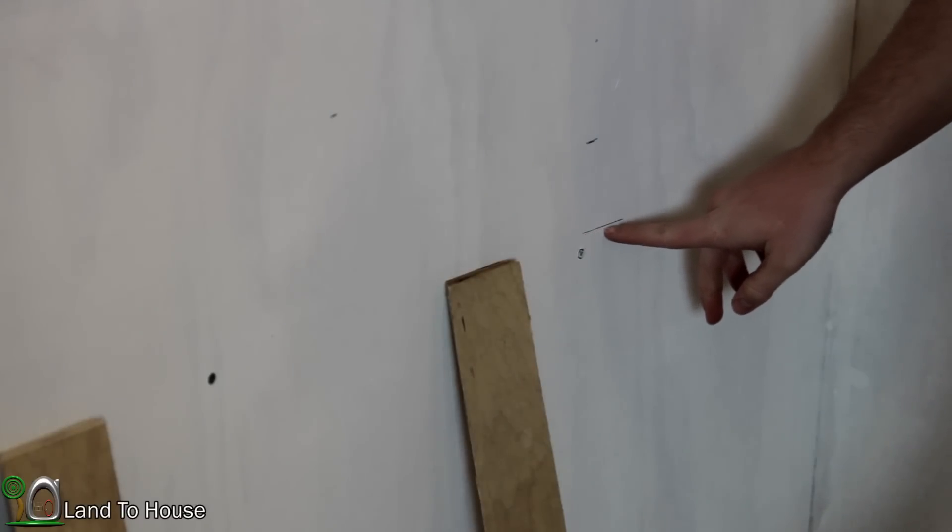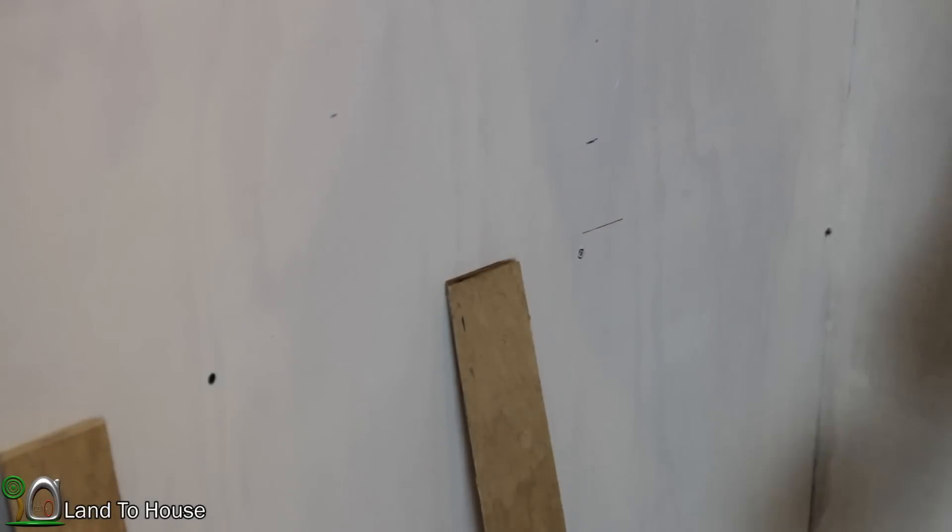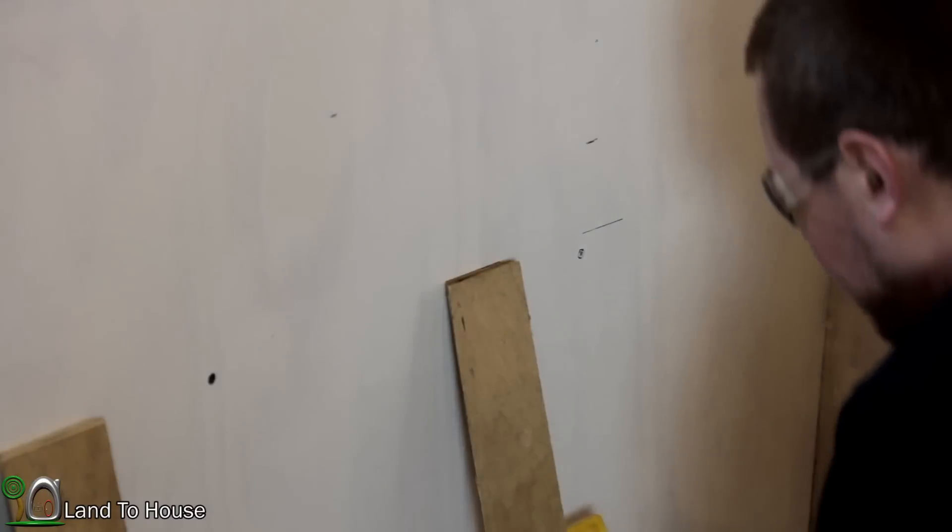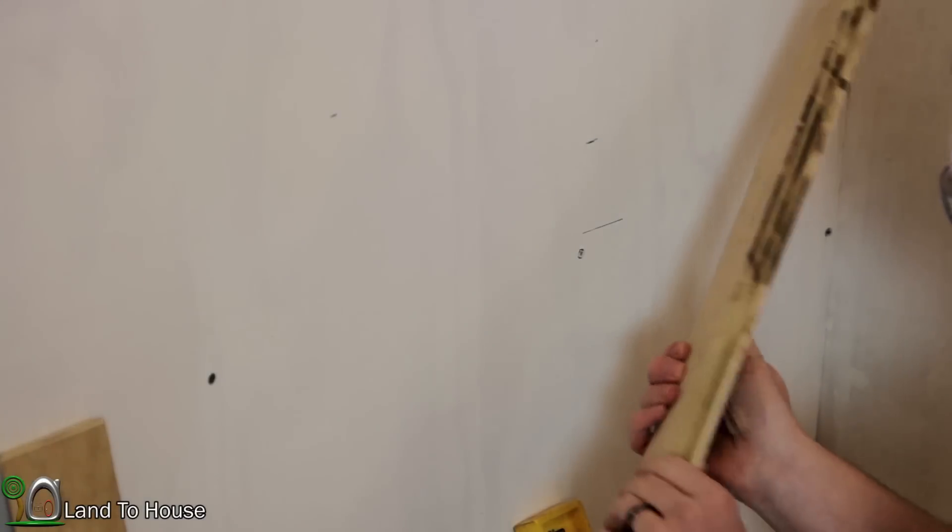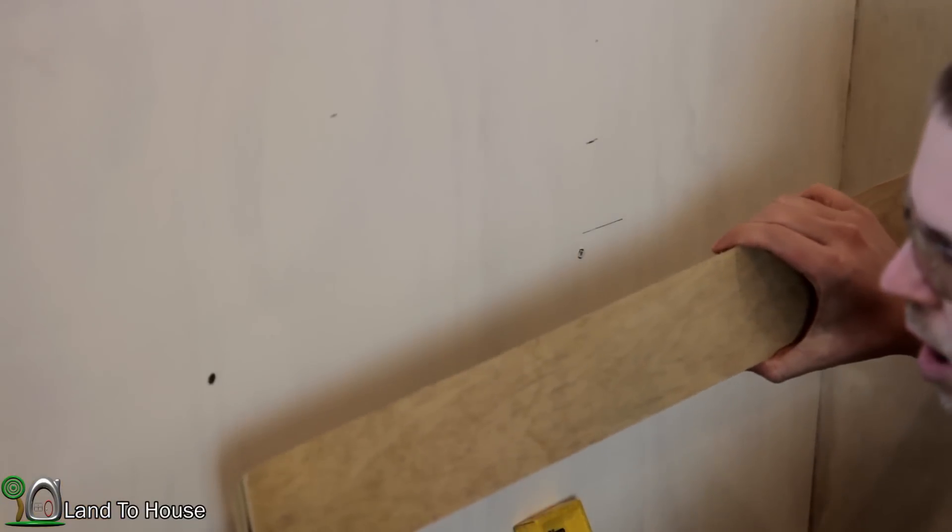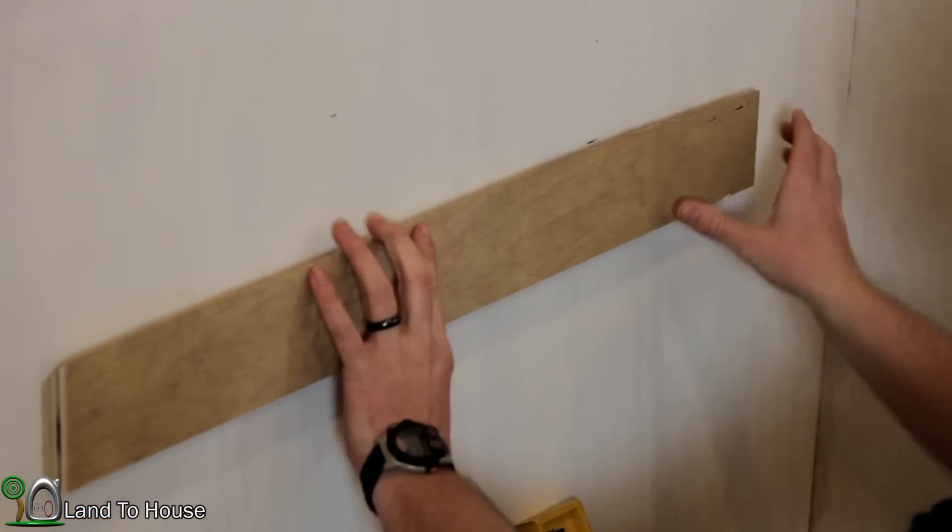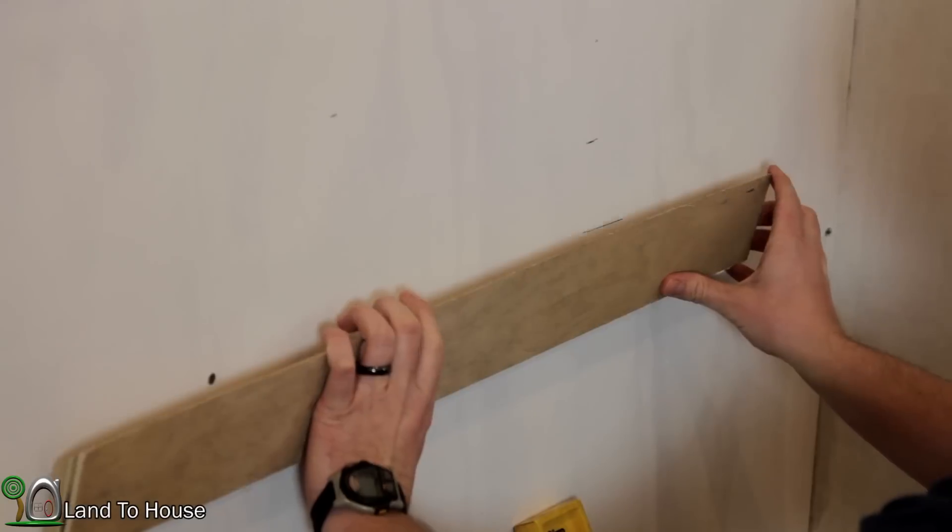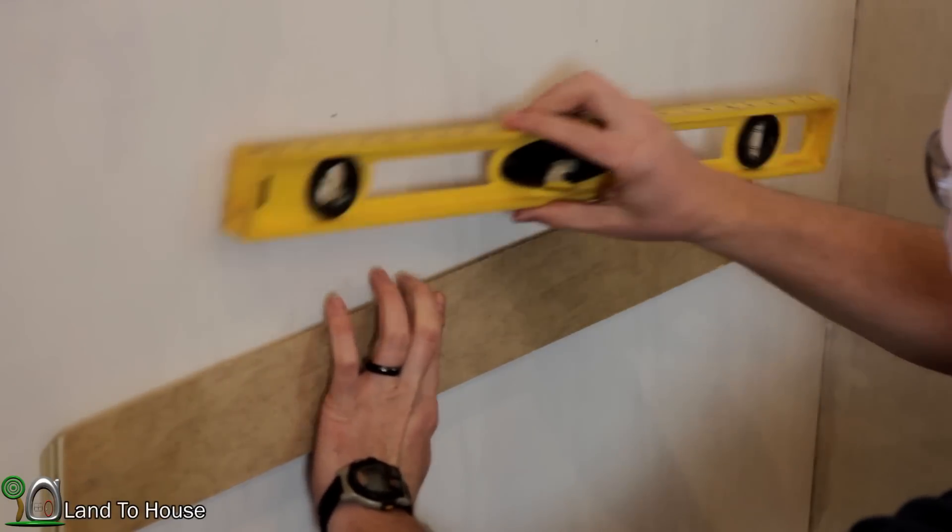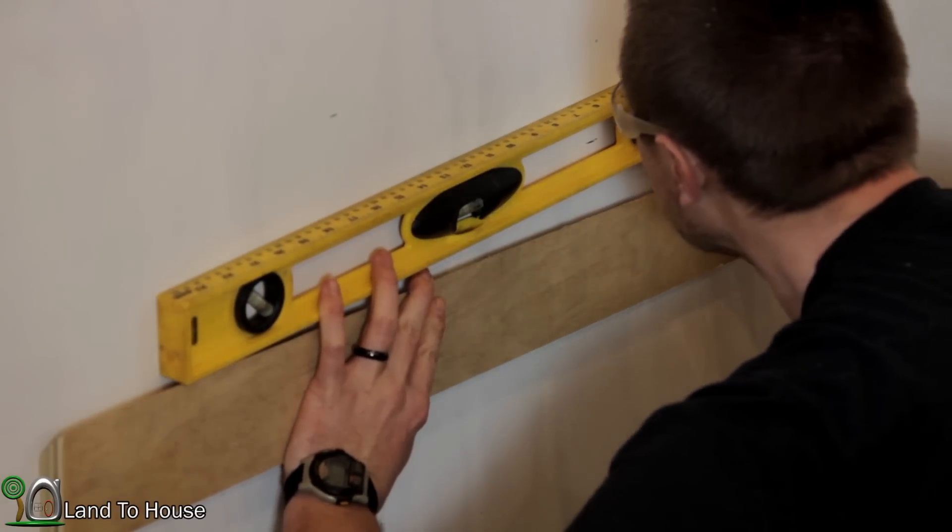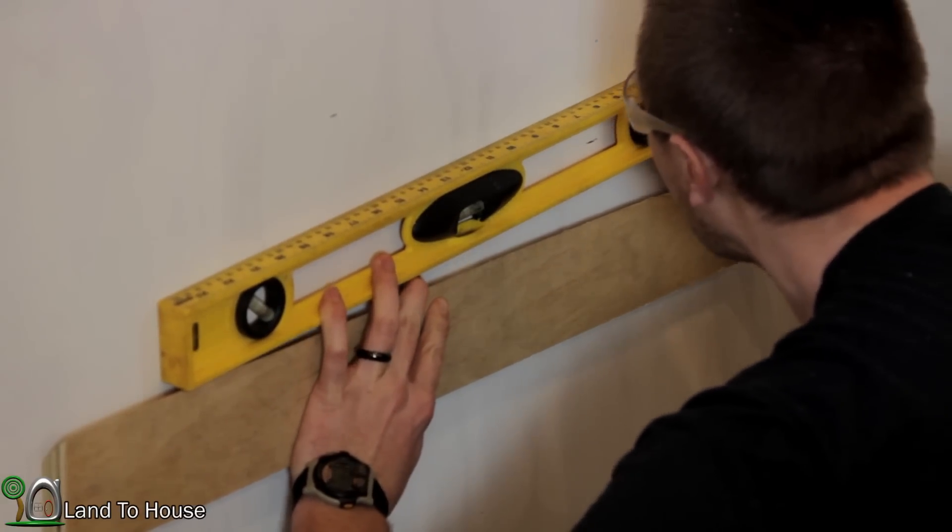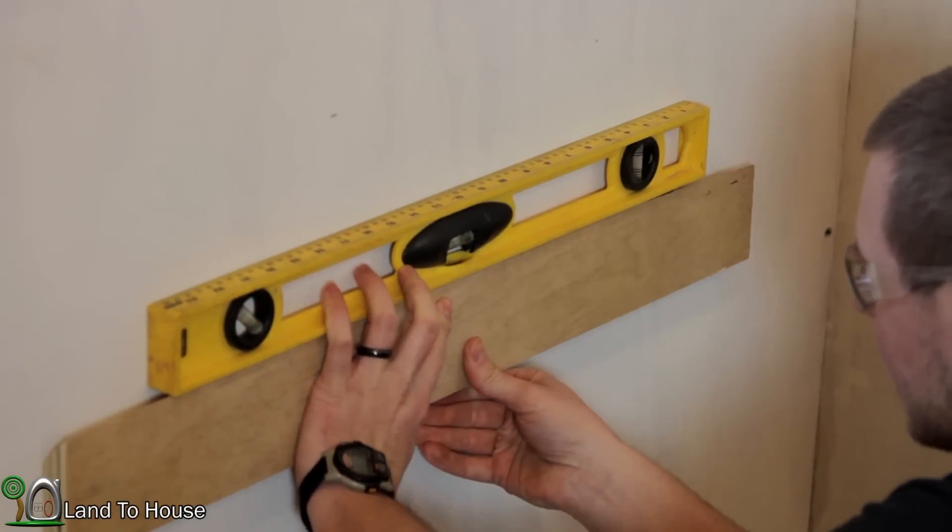I measured down to this point right here and that's where I want this larger piece of the shelf to be. So the angle has to be facing towards the wall like this. So I want to make sure that we are level at, let's see here, so right there to find level.